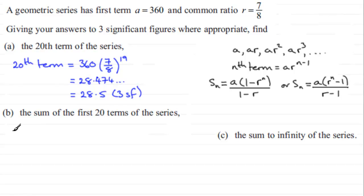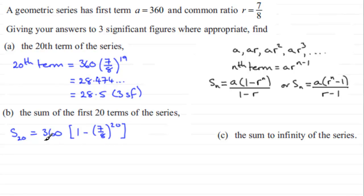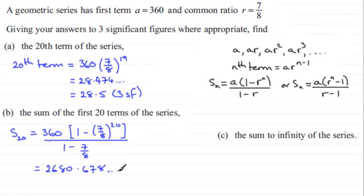The sum of the first twenty terms, S20, equals 360 multiplied by (1 minus (7/8) to the power 20), all divided by (1 minus 7/8). Put this through your calculator and you get 2680.678... Rounded to three significant figures, this gives 2680.